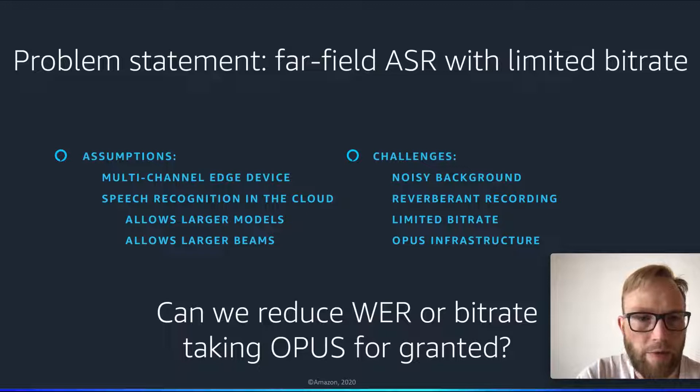However, we want to perform speech recognition in the cloud to allow larger models and larger beam sizes. The challenges are that the recorded audio can be very noisy and reverberant, but at the same time we have a limited bitrate budget which asks for compression. Let's assume for the time being that we want to stick with Opus compression since it's a widespread lossy audio codec. So the question is, can we reduce word error rate or bitrate taking Opus for granted?